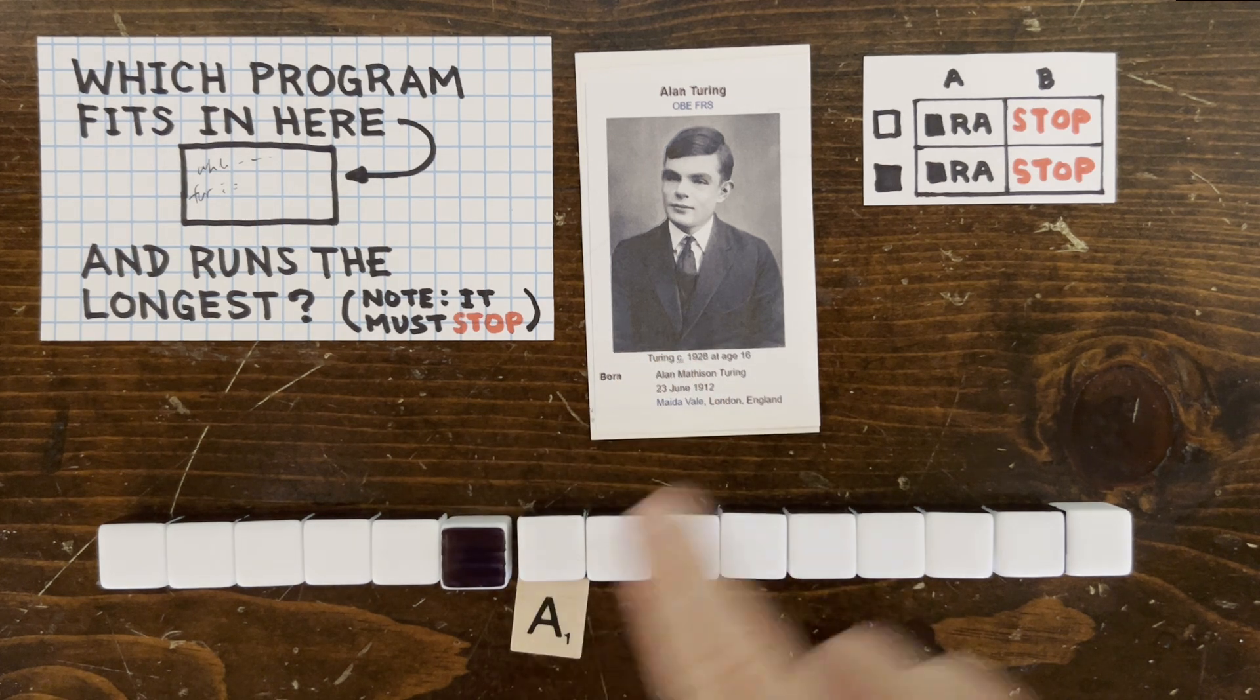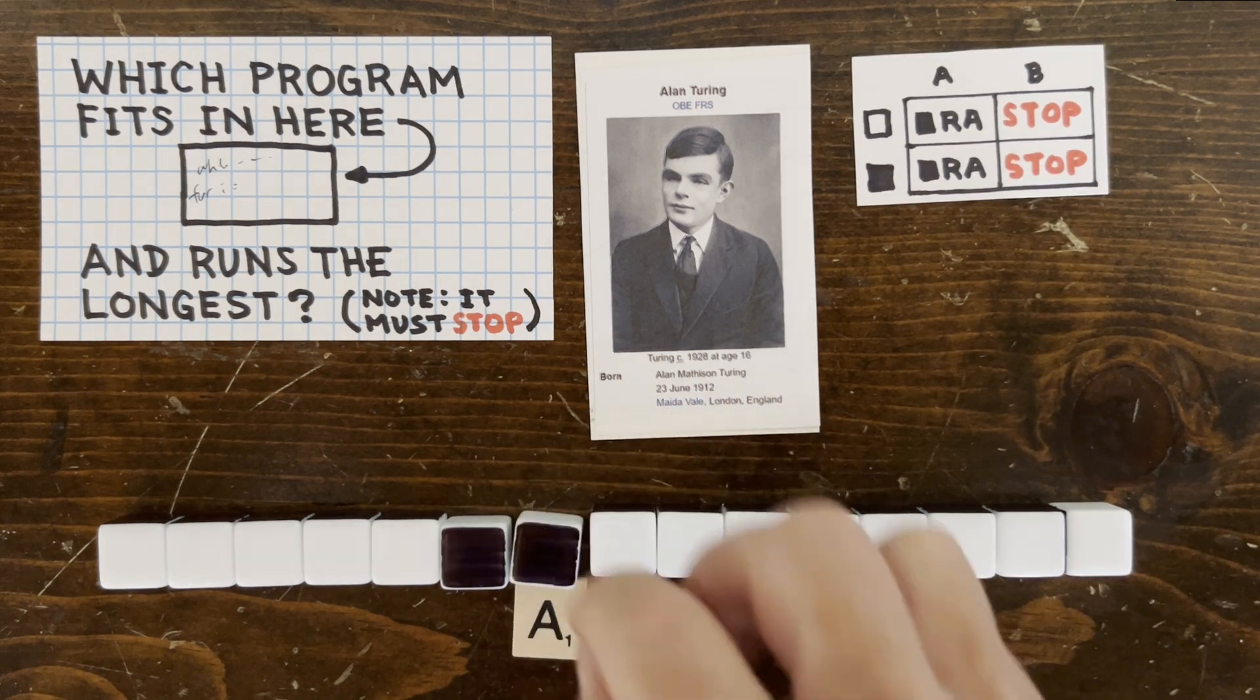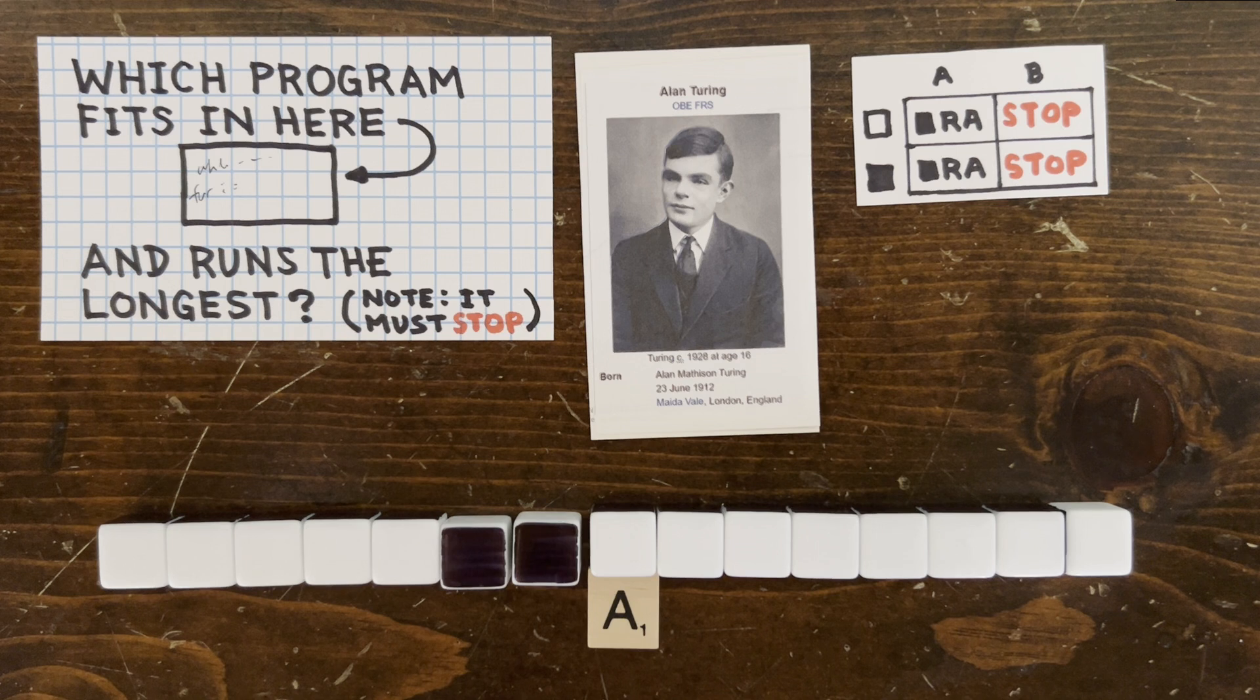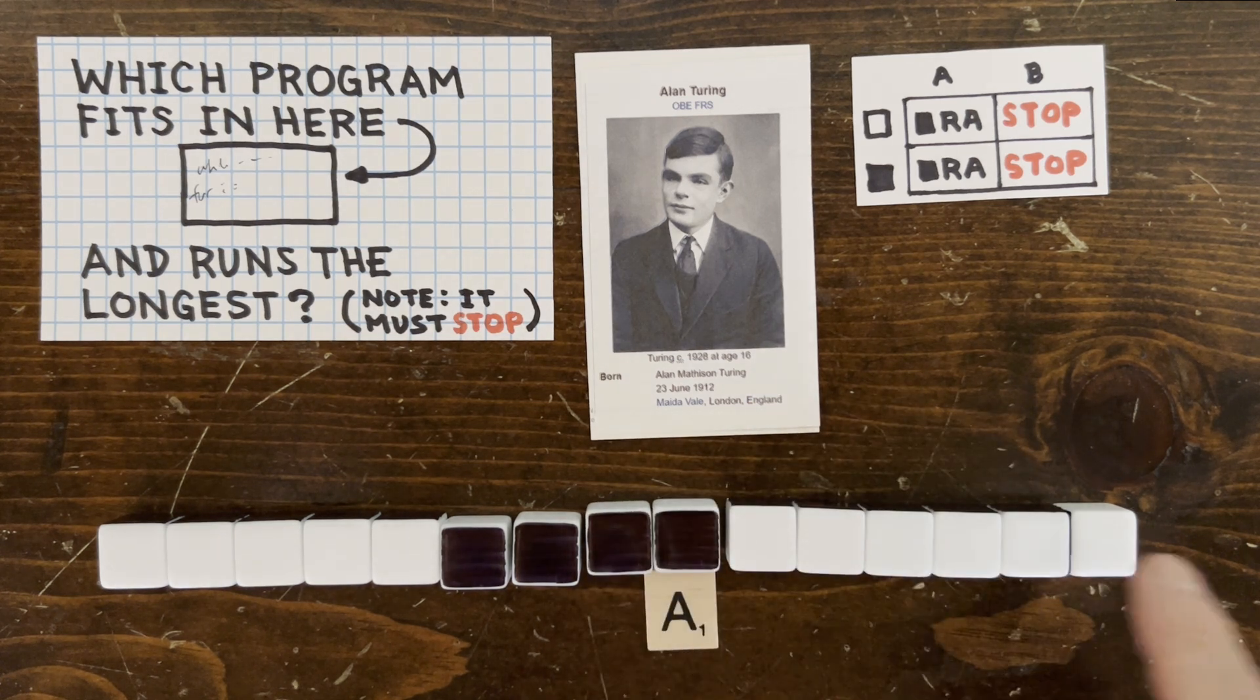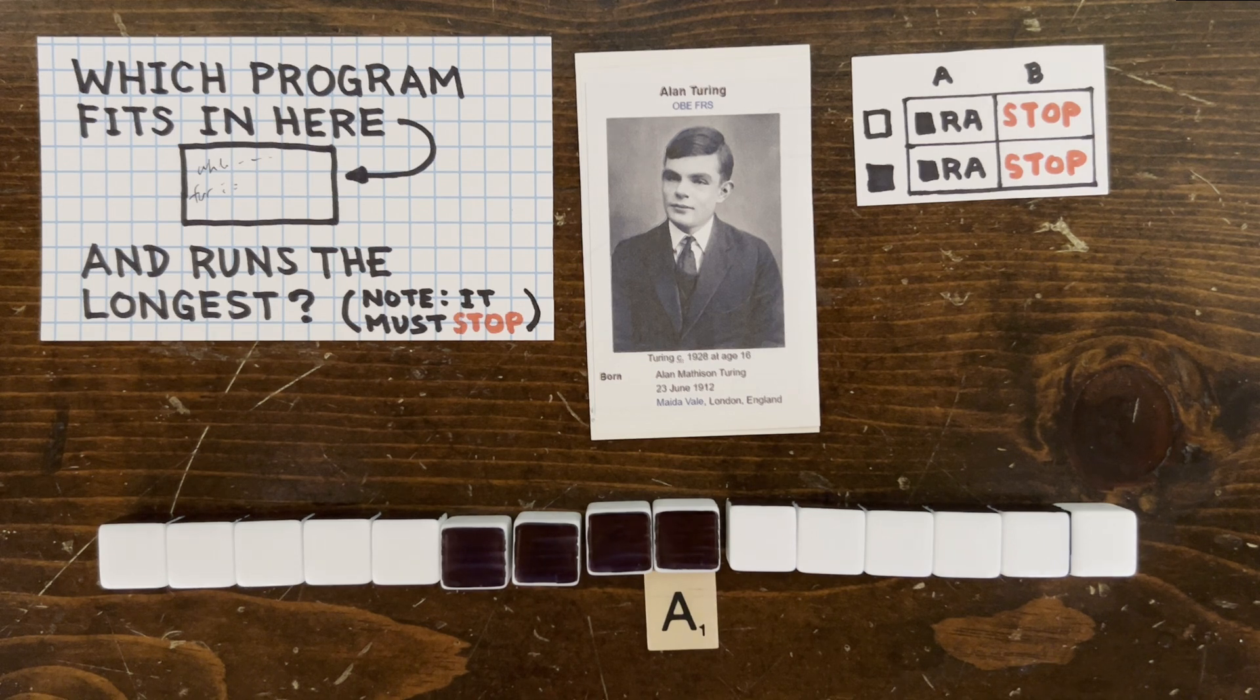Now we repeat. It seems we're still in state A looking at a blank cell, so we again fill the current cell with black and move right. And we can easily show that this program is going to run forever, filling the right part of the tape with black cells.